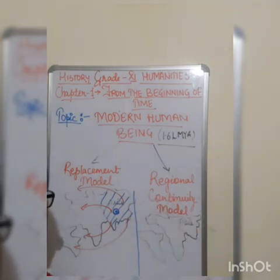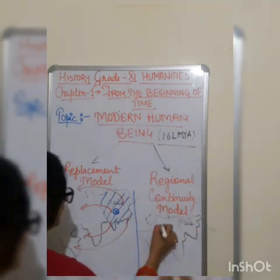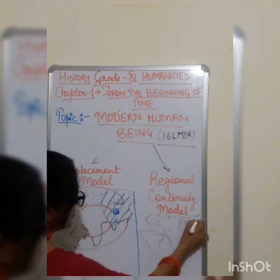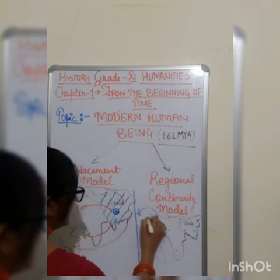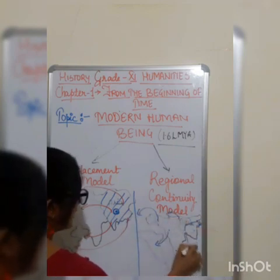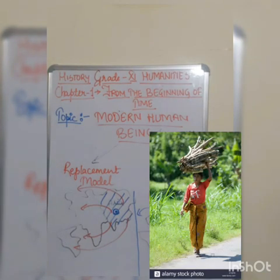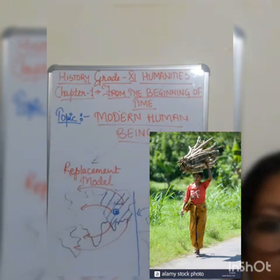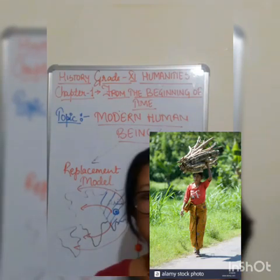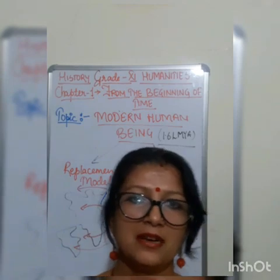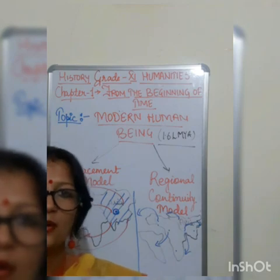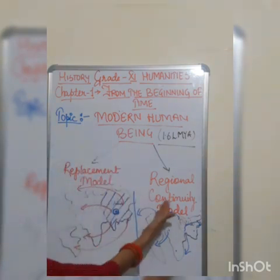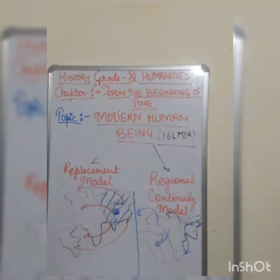Whereas in the regional continuity model, it is assumed that humans originated in different places or continents — not only in Asia, but possibly in different parts of Asia, Europe, or other places — and then migrated again to different areas. That is why fossils of homo erectus, homo habilis, and homo sapiens are being found in both Asia and Europe.